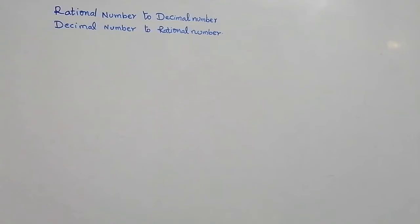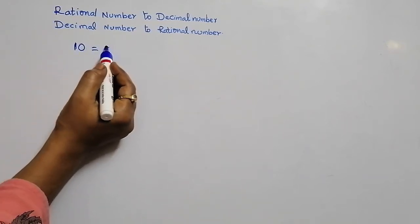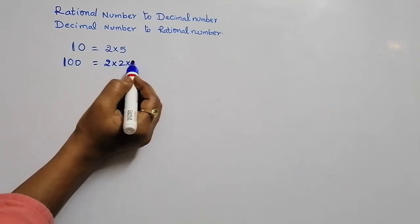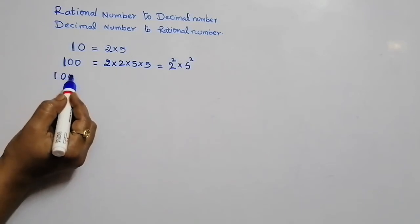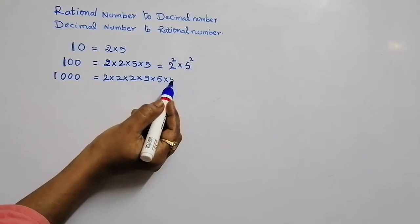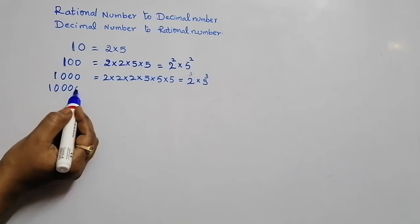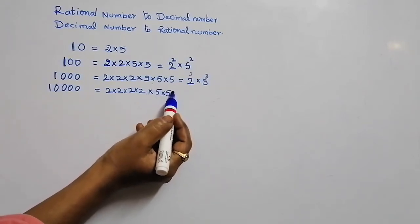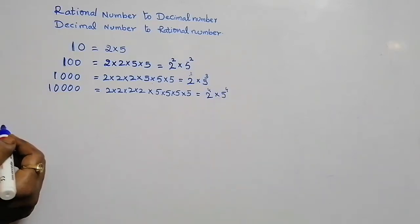First, I am going to explain the basics. Here I have written 10. 10 can be written in its prime factorization as 2 into 5. 100 can be written as 2 into 2 into 5 into 5, that is 2 square into 5 square. 1000 can be written as 2 cube into 5 cube. And 10,000 can be written as 2 power 4 into 5 power 4.